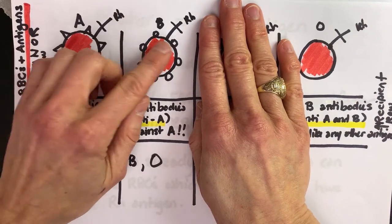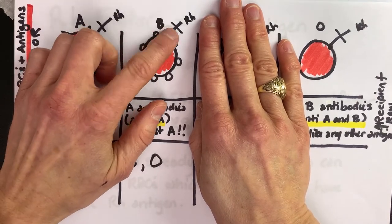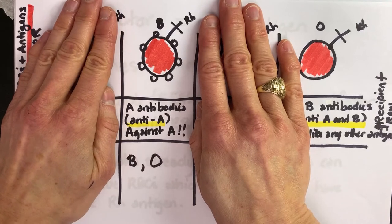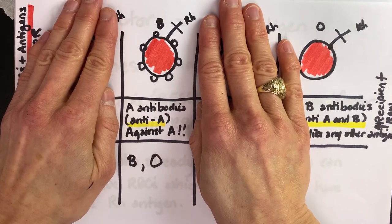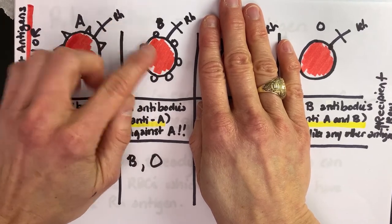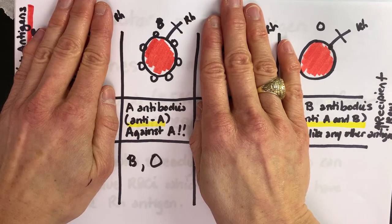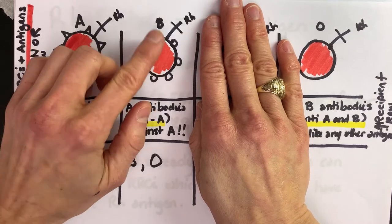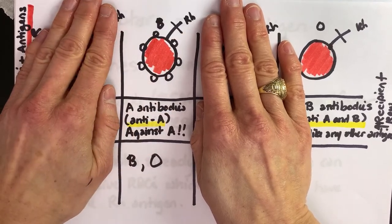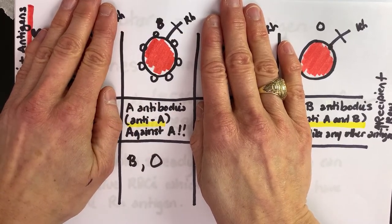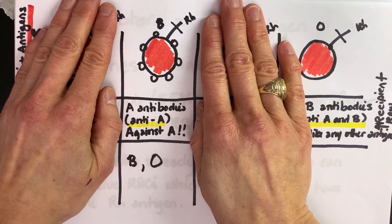So we need to think, can we give another person, can we give a cell that looks just like this one to this person? Yeah, we can, because you can always get your own type. And so now this person we know is Rh positive. And so it makes sense that we would be able to give them B positive.